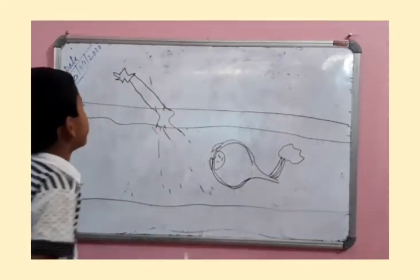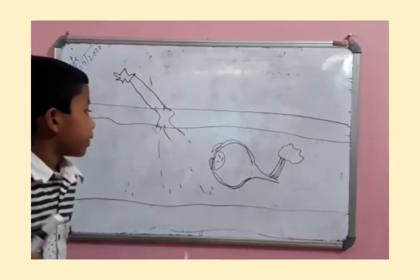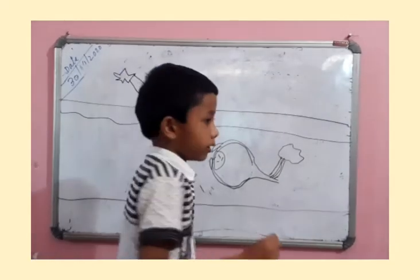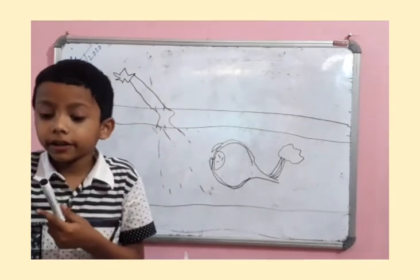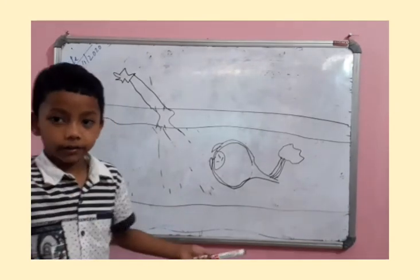But when the star appears bright, the pupil relaxes, allowing less light to enter.